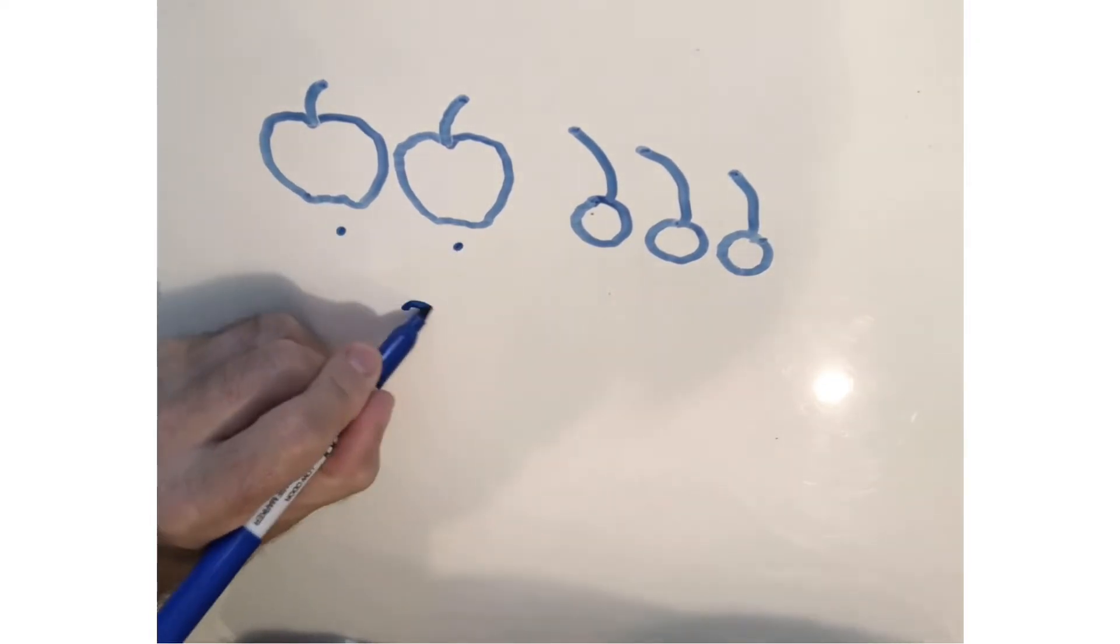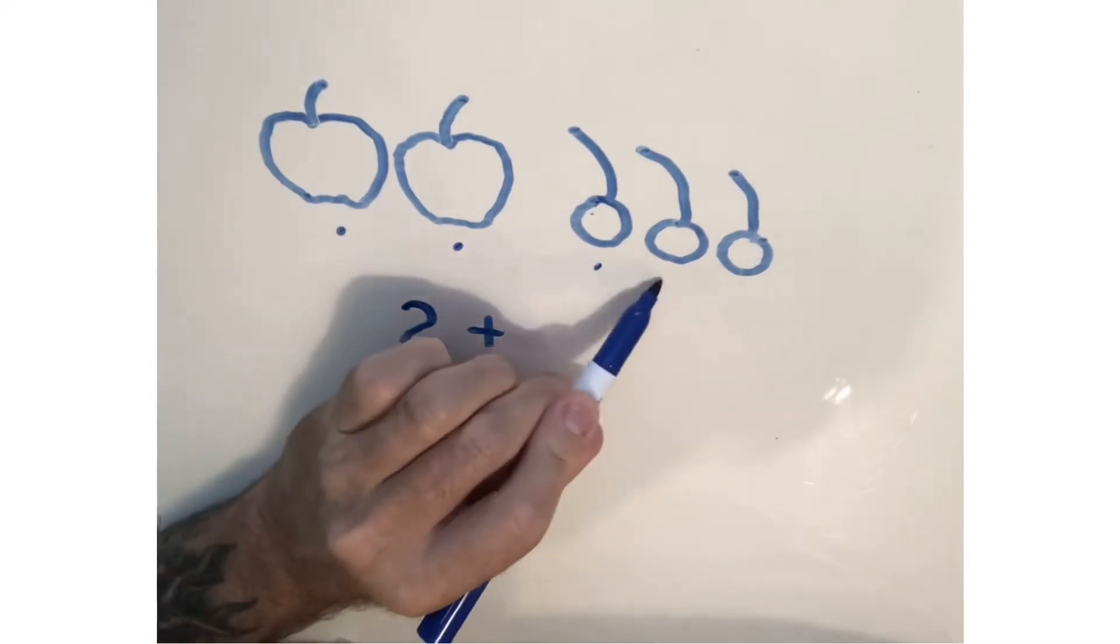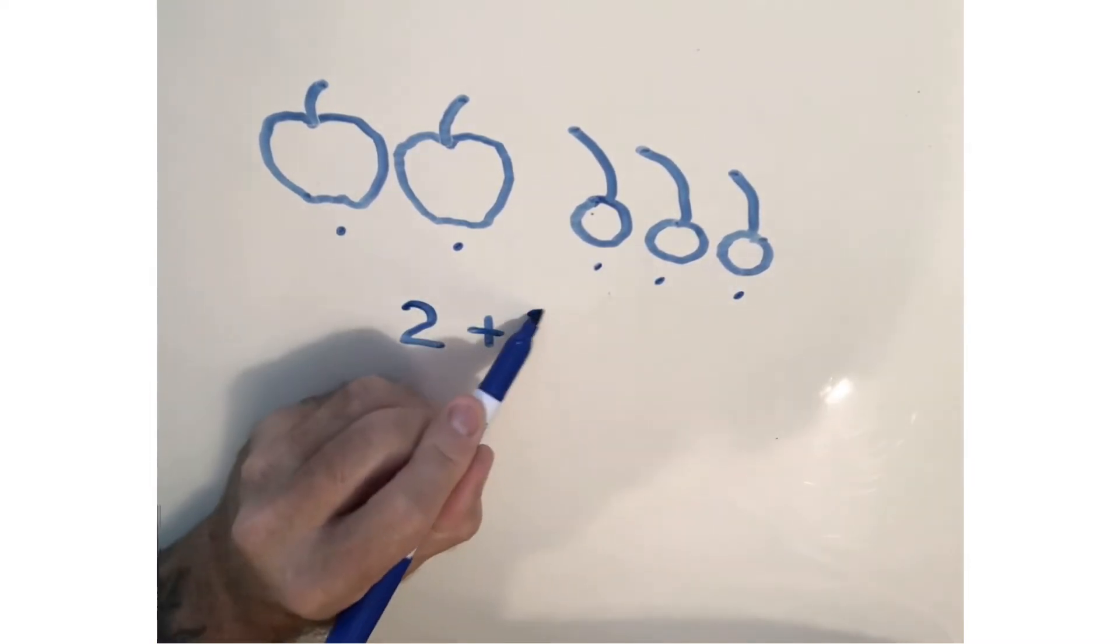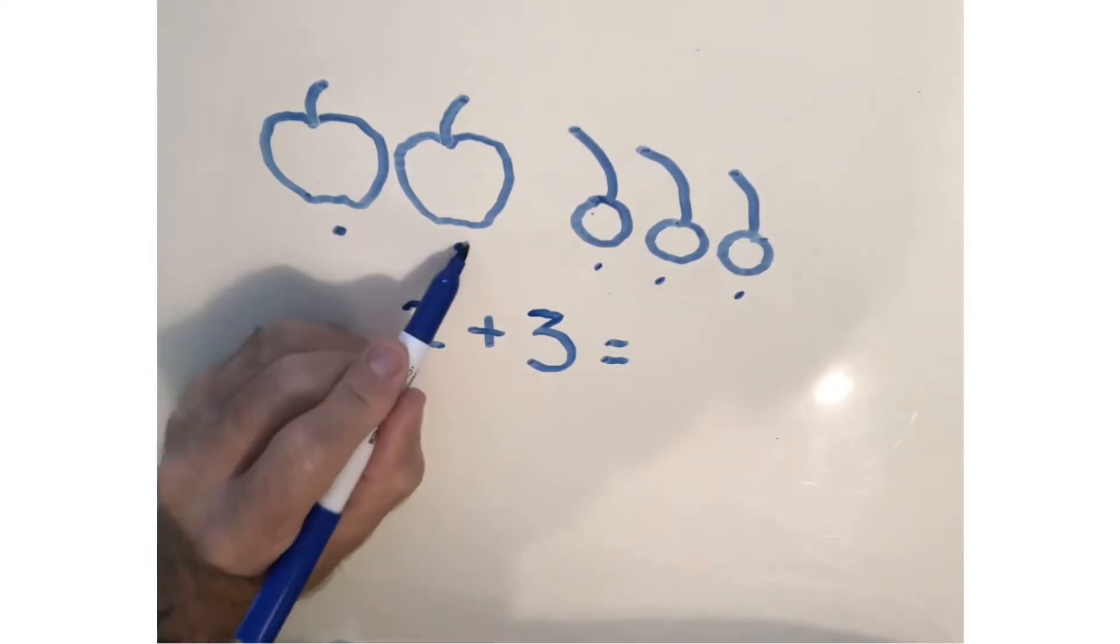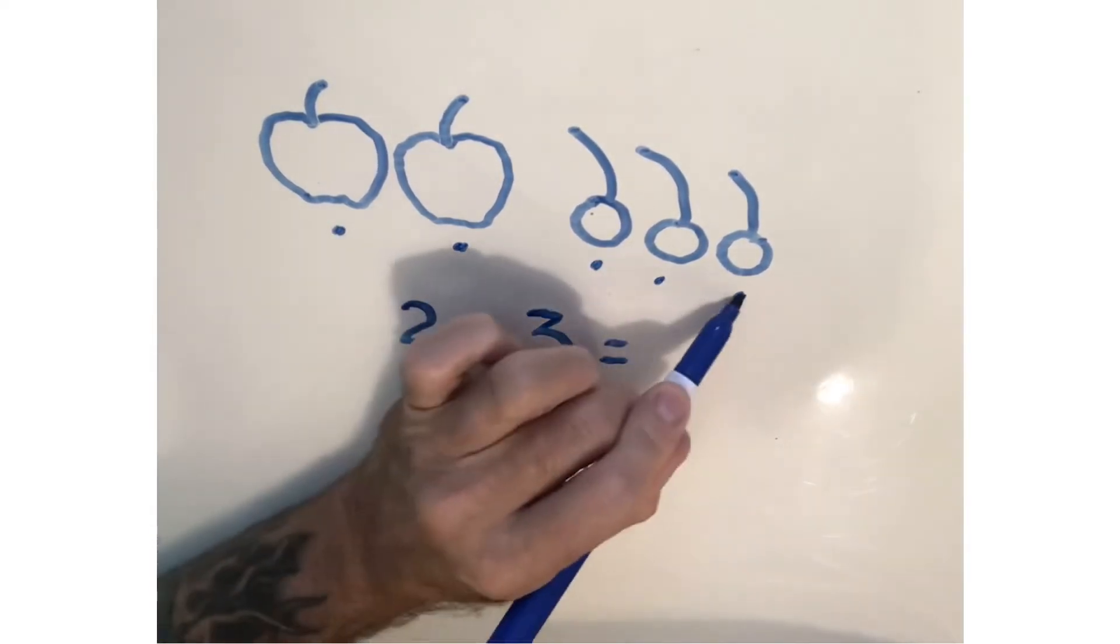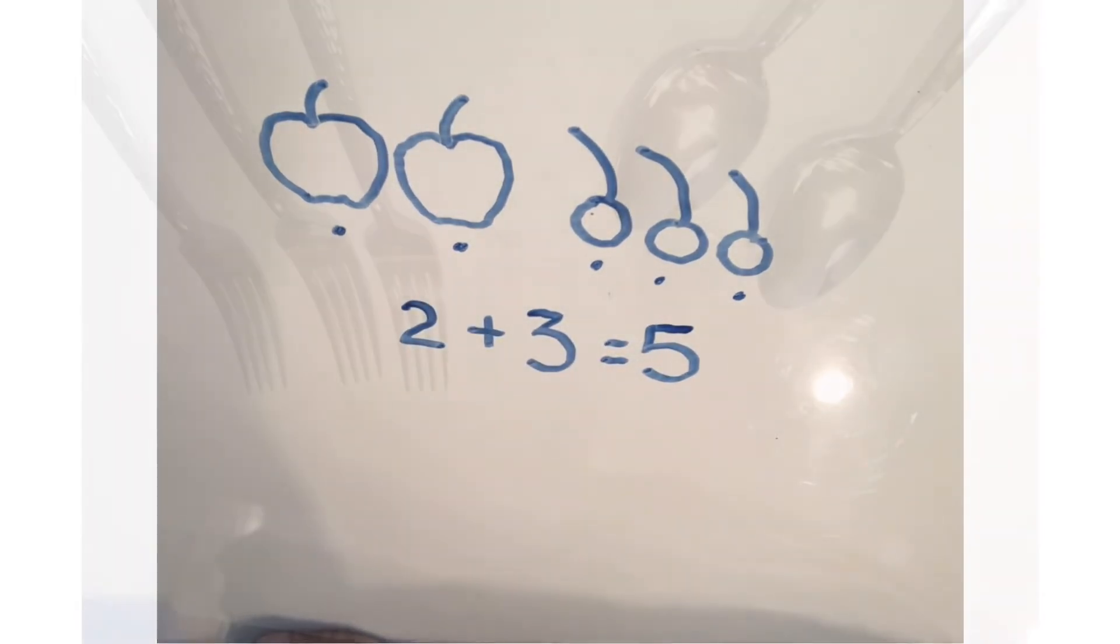One, two apples plus one, two, three cherries equals one, two, three, four, five. Two plus three equals five. That's a great number sentence.